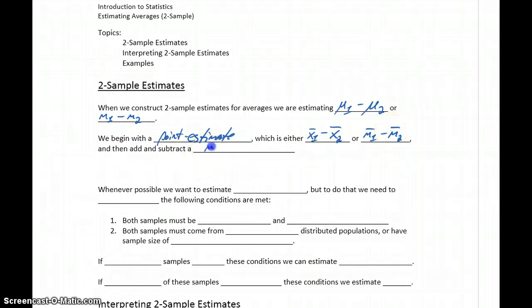And then we add and subtract some margin of error. So our confidence interval will be formed by taking x̄1 bar minus x̄2 bar plus or minus some margin of error to get the lower and upper bounds, meaning the difference between our sample means is going to be the center of that interval.